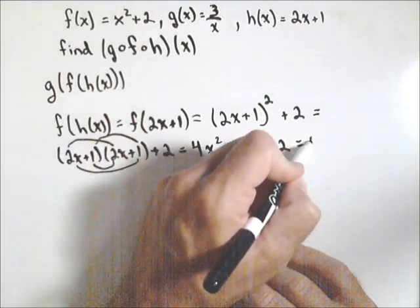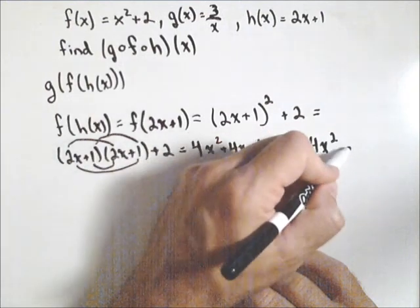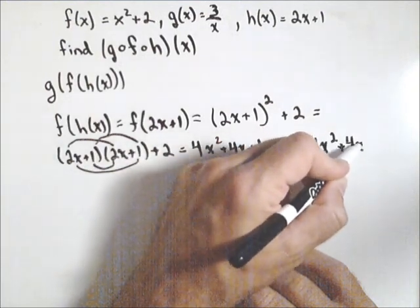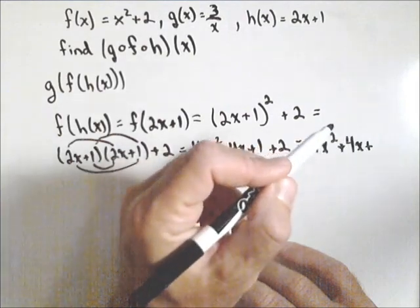So when I'm done, this is four x squared plus four x plus three.